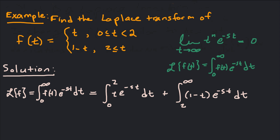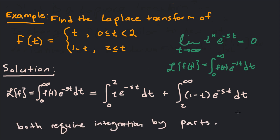Both of these integrals require integration by parts. I'm going to let u equal t and dv equal e to the negative st dt on the first integral, and then let u equal 1 minus t and dv equal e to the negative st dt on the second integral. I'll use the tabular method on both.